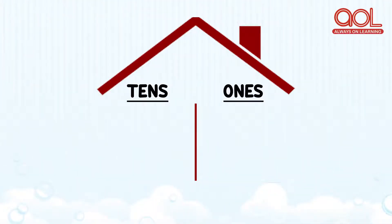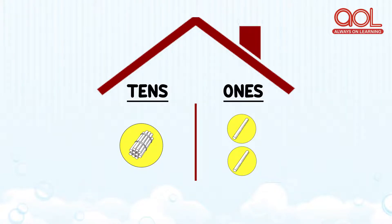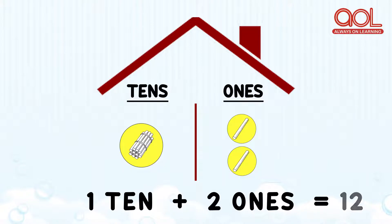Let's see the next number. In tens place, we have one ten, and in ones place, we have two ones. One ten and two ones will make number twelve.